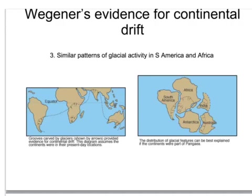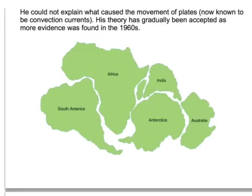Wegener also noticed similar patterns of glacial activity in South America and Africa, such as U-shaped valleys and moraines of rocks which had travelled down from glaciers. This was puzzling as these countries are all relatively close to the equator and far from the poles. This can be explained because these countries were once very close to each other and at one of the poles, so during the Ice Age these glacial features were laid down. However, those continents have since shifted apart. As Wegener couldn't explain what caused the movements of the plates, his theory wasn't accepted by other scientists at the time.